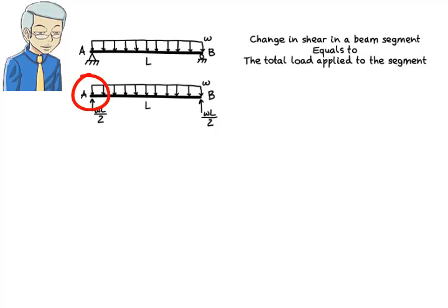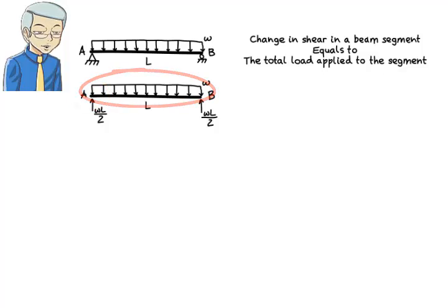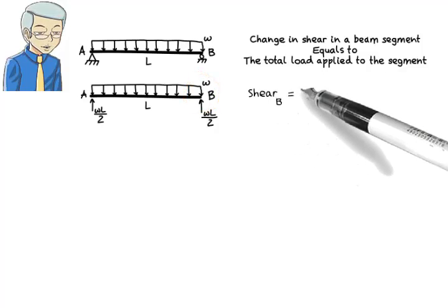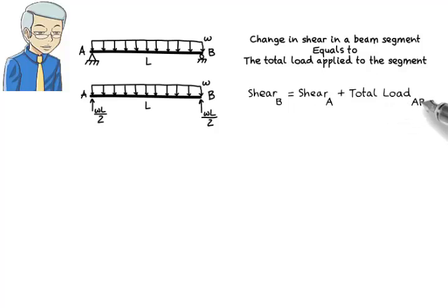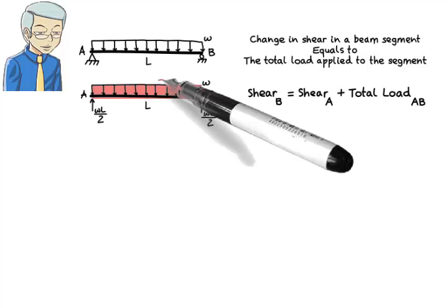So if we know shear at A, and we know how much load is being applied to segment AB, then we can easily calculate shear at B. That is, shear at B equals to shear at A plus the total load applied to the segment. The total load applied to the beam segment here is the area of the rectangle having L as its base and W as its height. Therefore, the total load is negative WL.